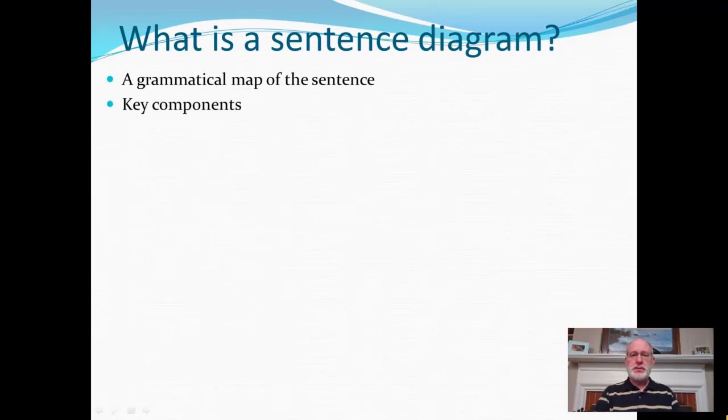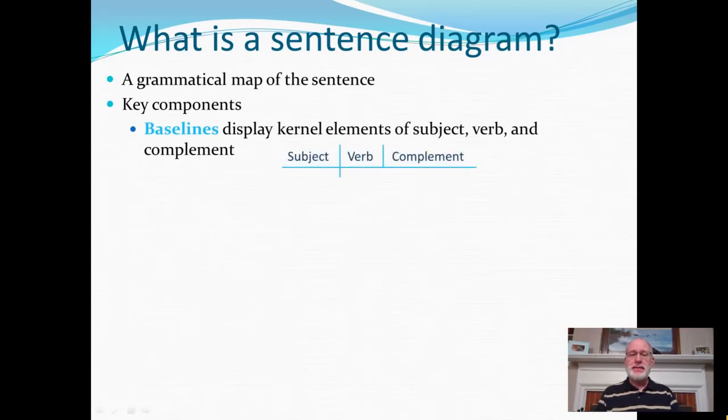It has some key components that we'll consider here. First of all, a sentence diagram has baselines, and those are the parts of the diagram that display the kernel elements of each clause, the subject, the verb, and any complement the verb may have. A baseline looks something like this.